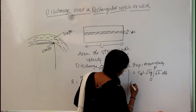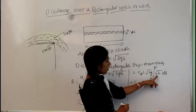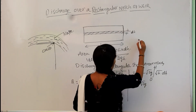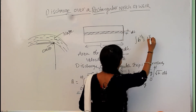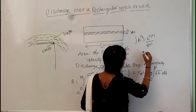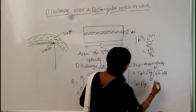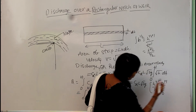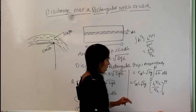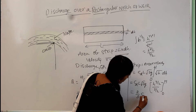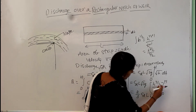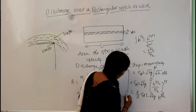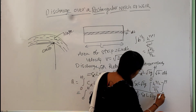So we have Cd·L·√(2g) multiplied by the integral of h^(1/2)·dh. The integral of h^(1/2) equals h^(3/2) divided by (3/2). Taking (3/2) to the outside gives a factor of (2/3). Substituting the limits from 0 to H, we get H^(3/2) minus 0, since 0^(3/2) is always zero.